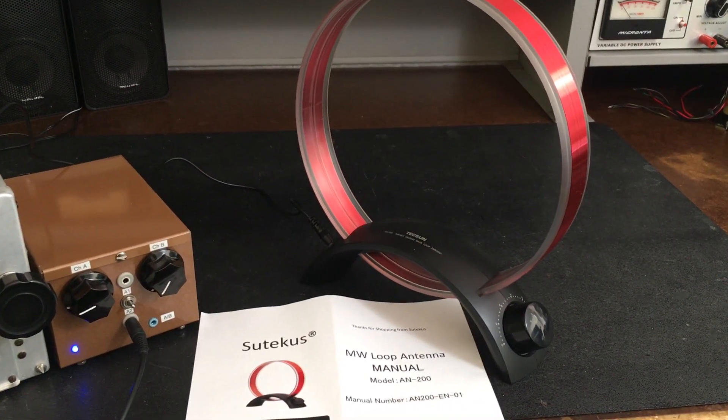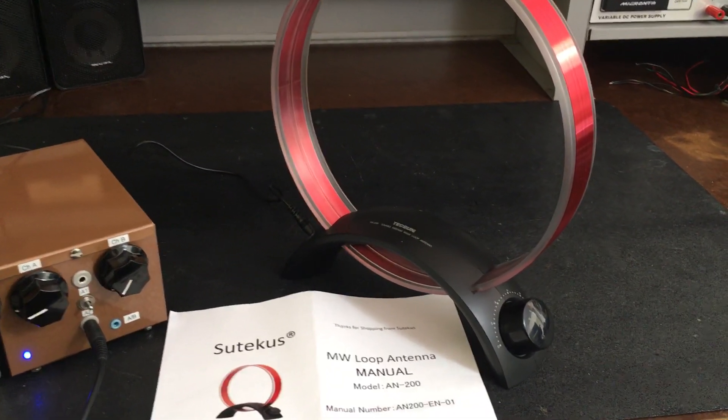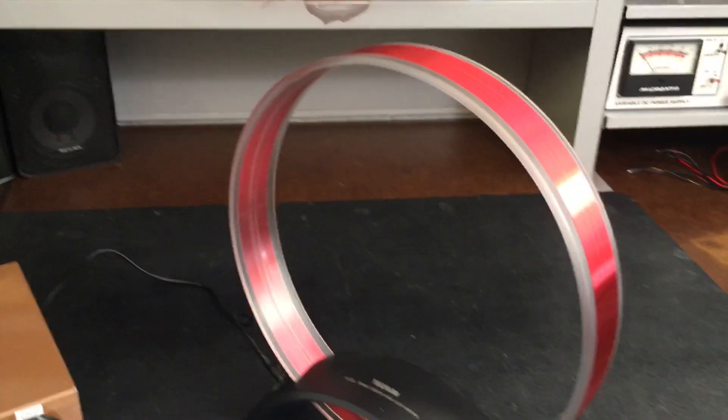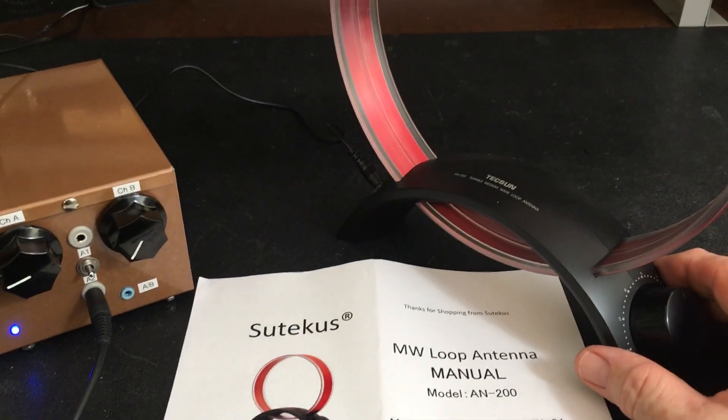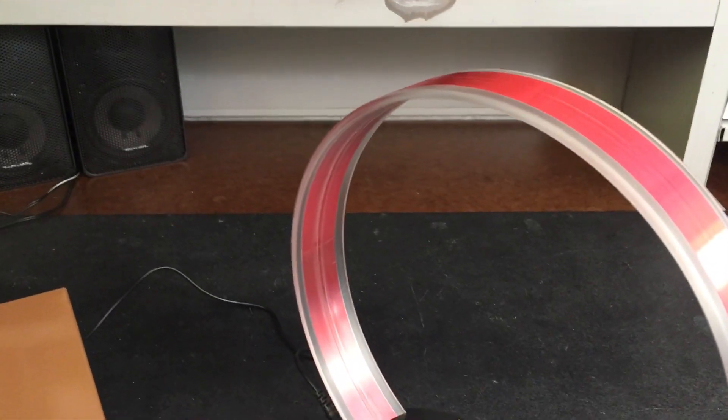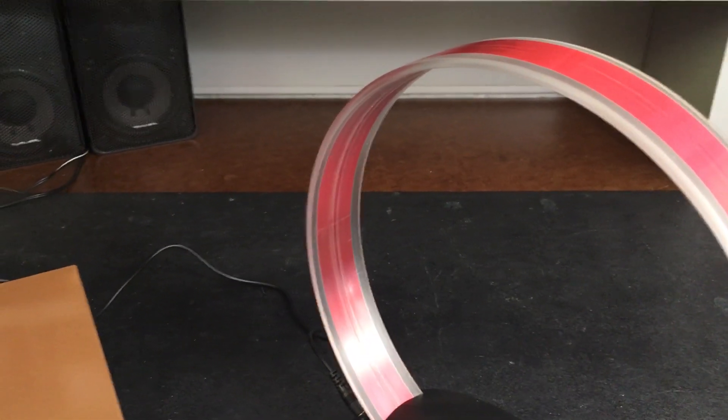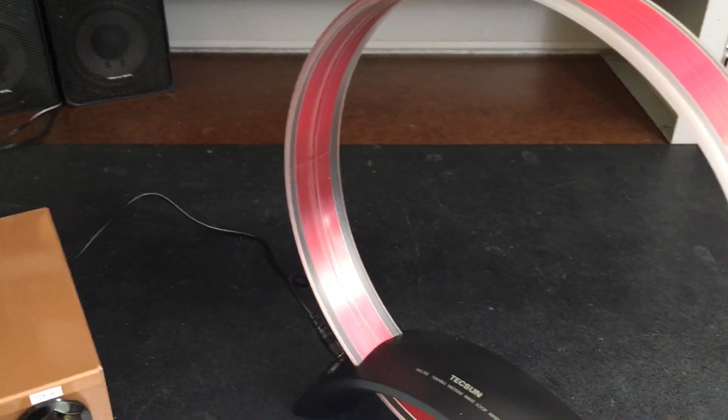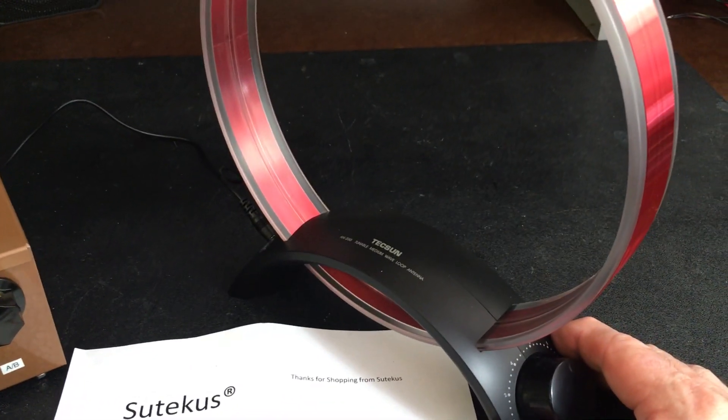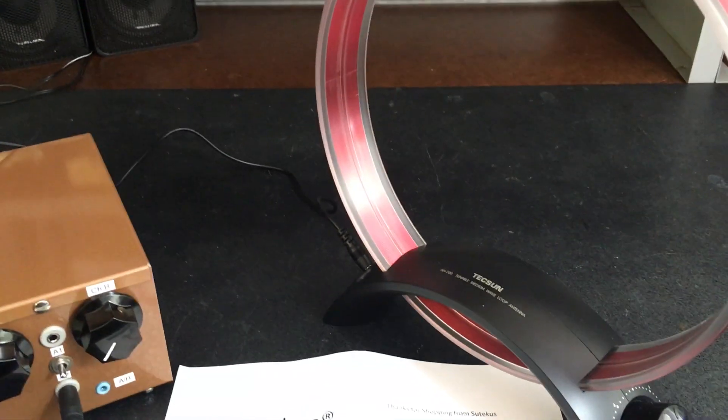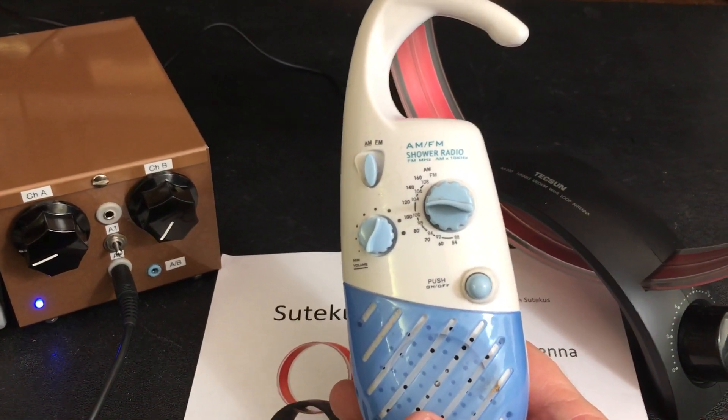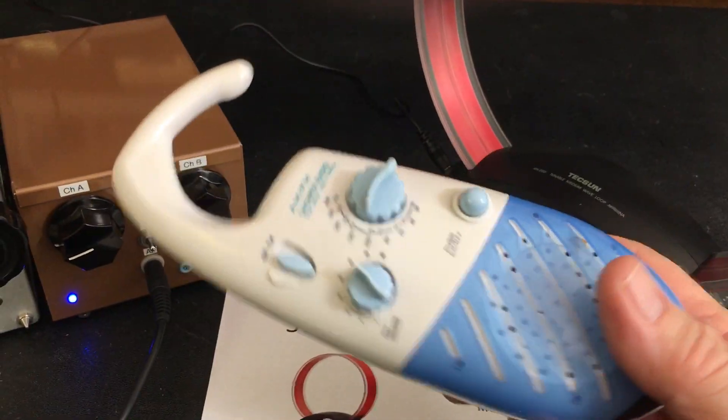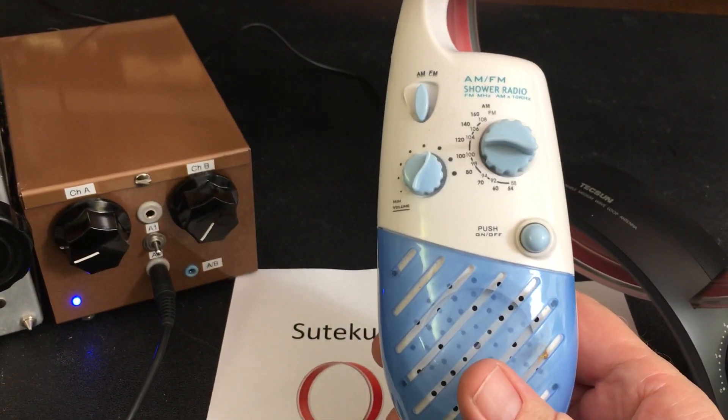Hey everybody, welcome back to my videos. I got something today that may be of great interest to you folks out there. I have what's called a medium wave loop antenna. This happens to be a Stutkus model AN200, and this is what you want to use when you want to improve the signal from a little transistor radio, the little shower radio here.